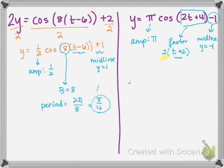For this one, we're focused on what this 2 does on the t. So if my B value is 2, then my period is 2π over that B value, and I get a period of π. So amplitude is π, the period is π, and the midline is at y equals negative 1.